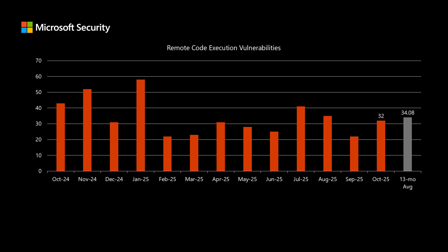Before I dive into today's release, I'd like to compare it to the previous 12 months to get an understanding of how it stacks up. This month, there are 183 newly disclosed CVEs. Of those, 32 fall into the remote code execution impact category. That's a little bit lower than our average over the past 13 months of just over 34. Remote code execution is typically the type of impact that has the most risk associated with it — it would allow a threat actor to install software or other high-level activities.